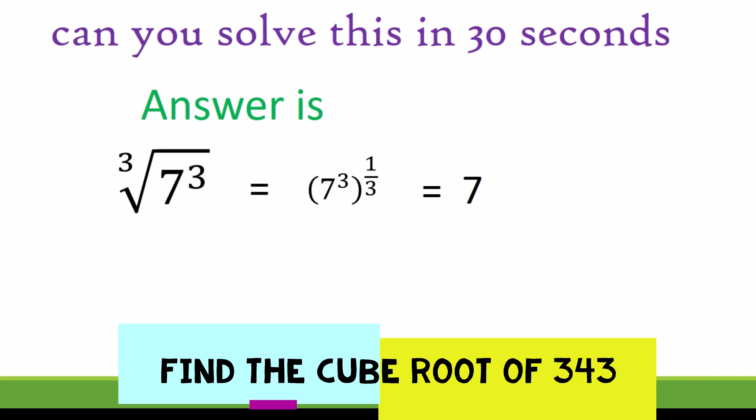So seven, and as you can see here you have three in the index. It gives you one over three, and you have seven to the power of three to the three power, and you cancel the three with three, you're left with seven. So the answer should be seven, and that's the right answer.